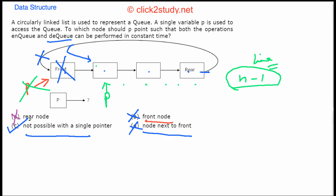So it is not possible with a single pointer. That's the answer. In a queue, you need both a front pointer and a rear pointer. Using only one pointer P, you cannot perform both enqueue and dequeue in constant time.